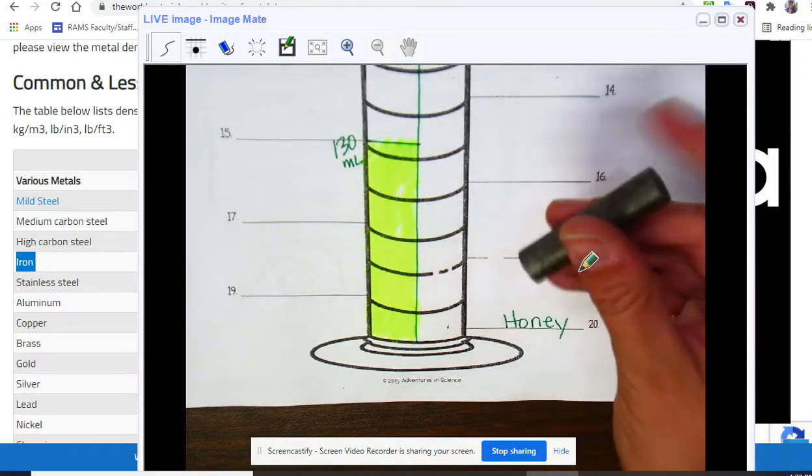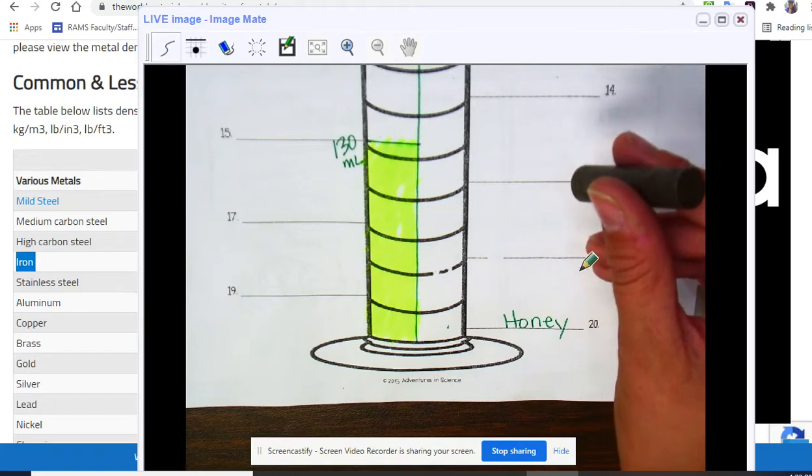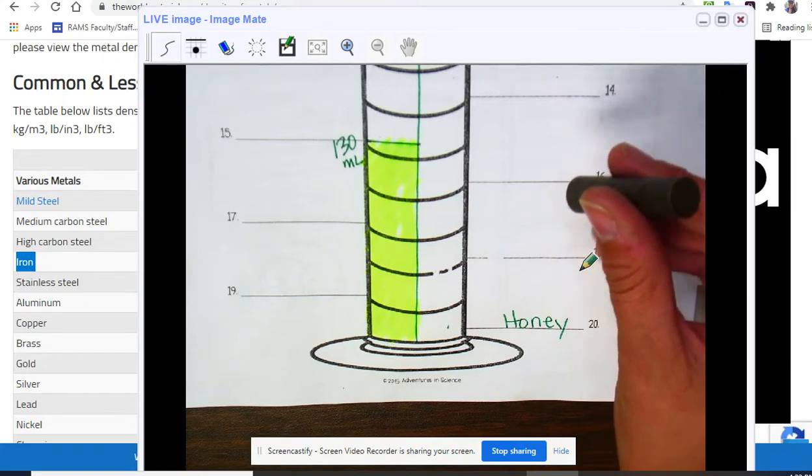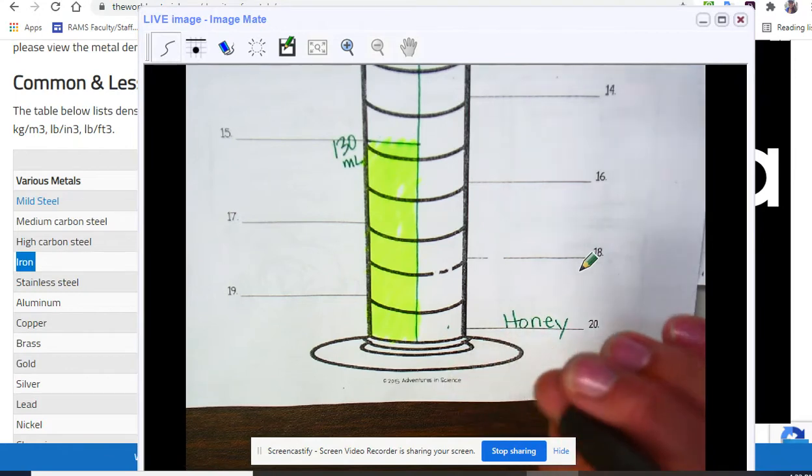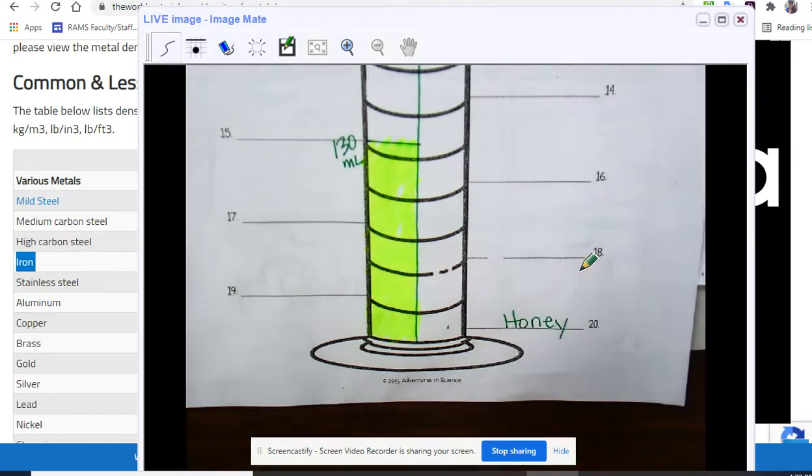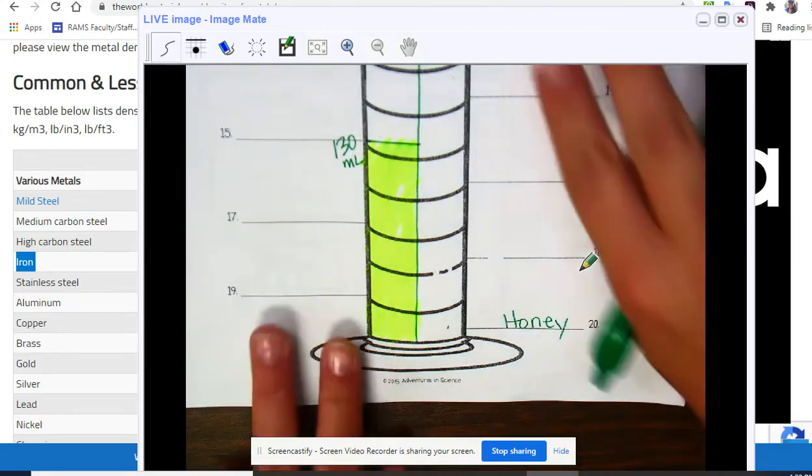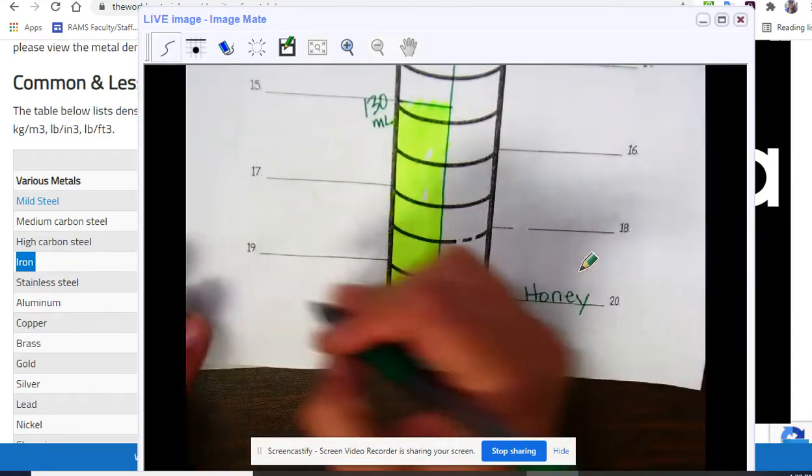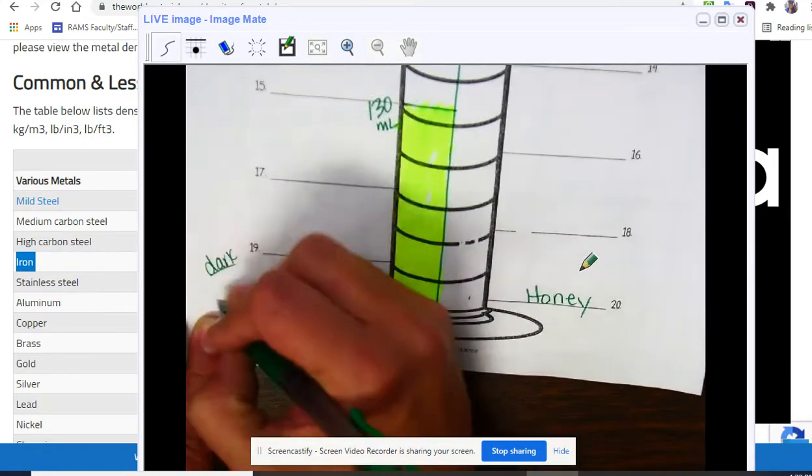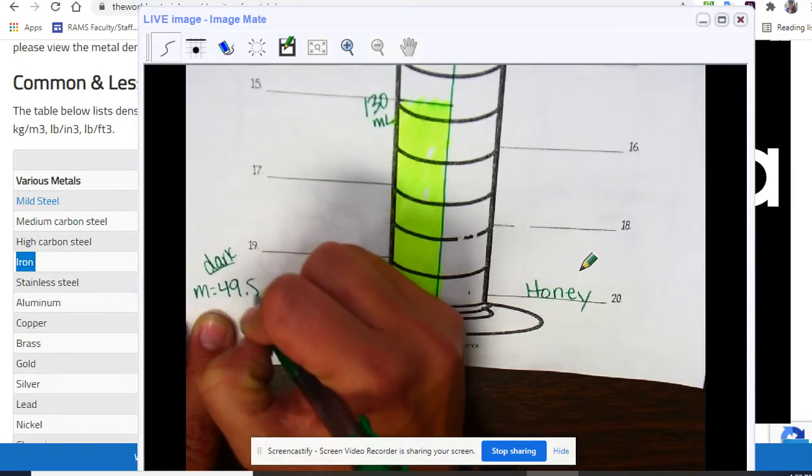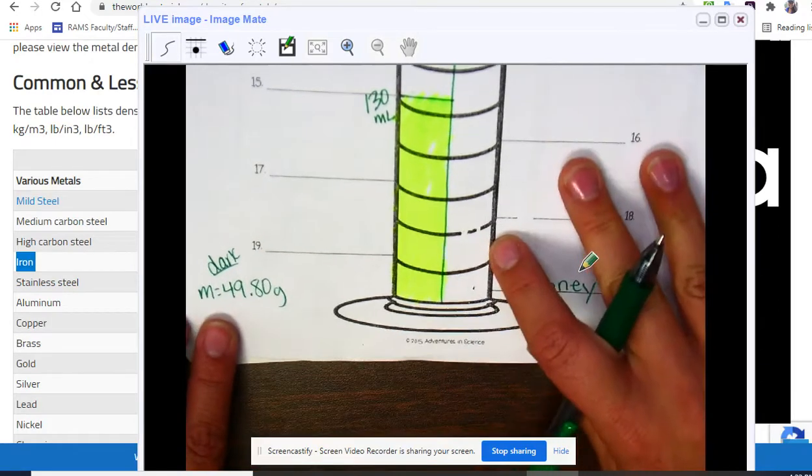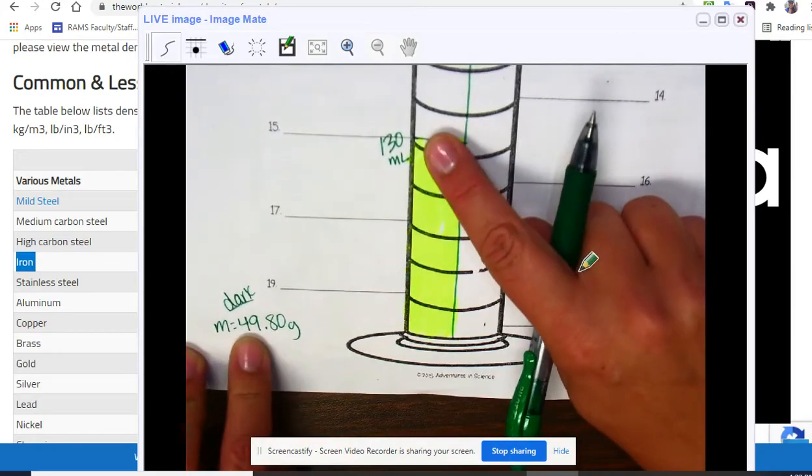So, in order to get density, what other piece of information am I going to definitely need to get? Weight. Probably the weight, the mass, right? So, I'll go ahead and do that. If we put it on this little scale, we get a mass of 49.80, 49.80. So, what we're going to do is down here at the bottom, we're going to go ahead and write that down. We're going to say, this is a dark cylinder. We're going to say mass, 49.80 grams, right? So, can we just use these two numbers and get a density?